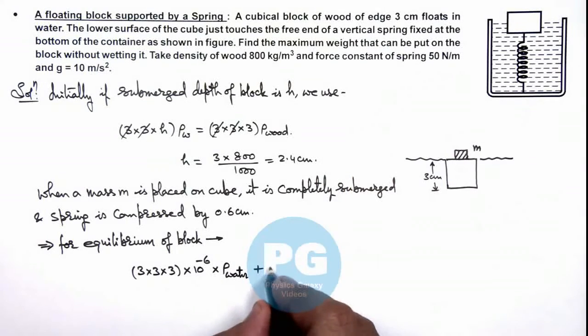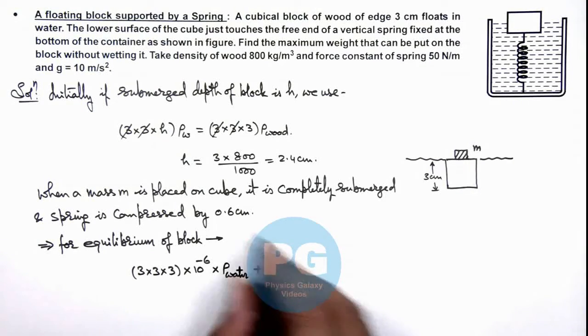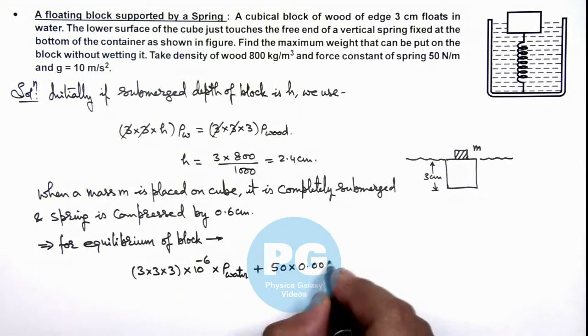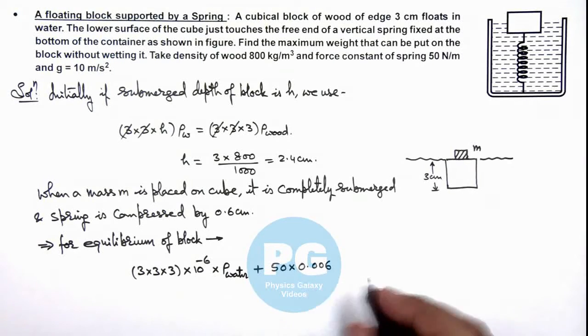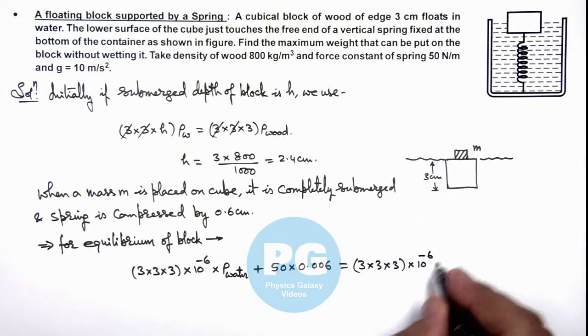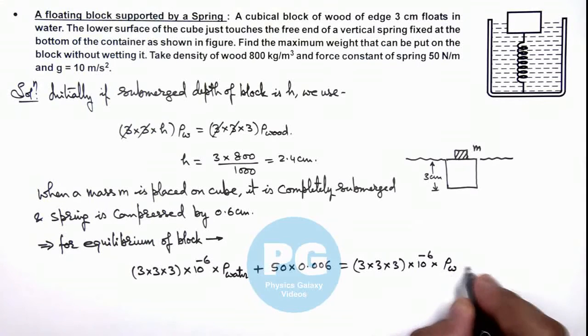So this will be 50 multiplied by x. Here is 0.6 centimeter which is 0.0006 meter. This should be equals to the total weight of the system which is 3 by 3 by 3 multiplied by 10 to power minus 6 multiplied by density of wood plus m.